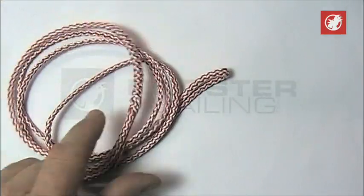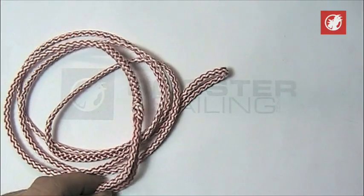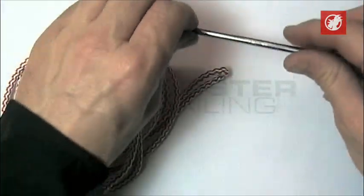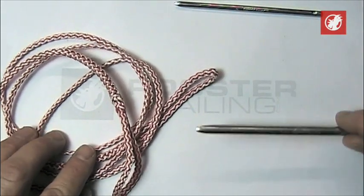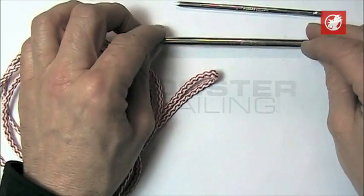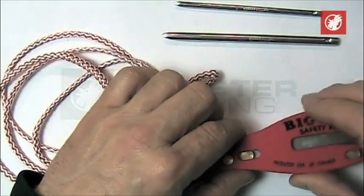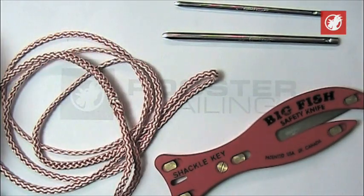To make this double-ended eye splice in 4mm spec 12, we used a 4mm push-fid for the first eye splice. For the second eye splice, we needed to use a 5.5mm push-fid. And for the trimming of any lines, we used a big fish safety knife.